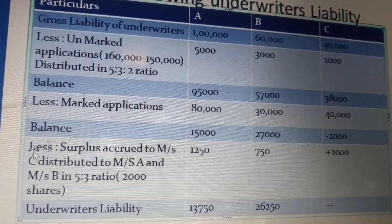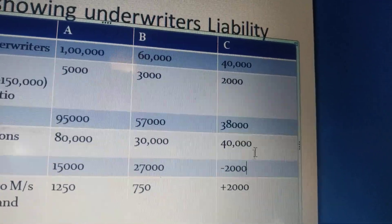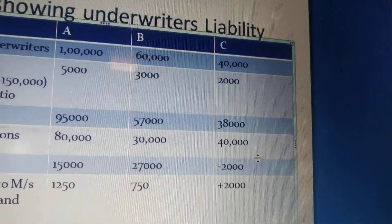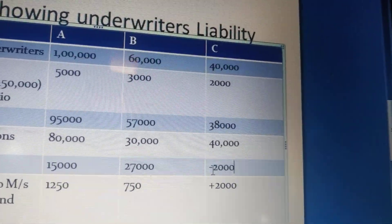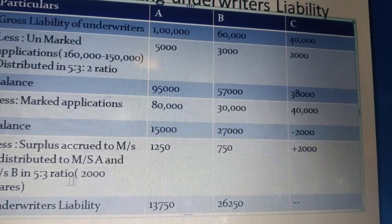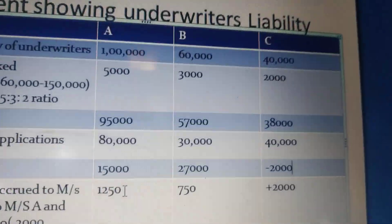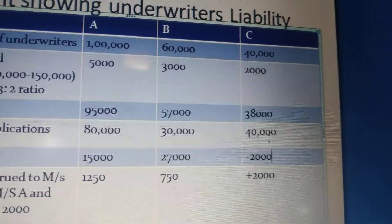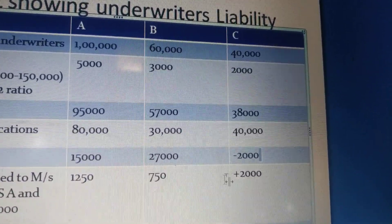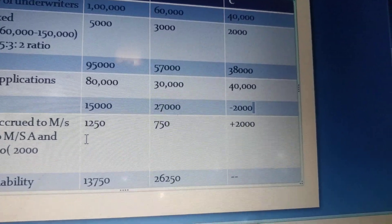Since C has a negative figure, it means C has a surplus of 2,000 shares — C has over-sold. This surplus of 2,000 is redistributed between A and B in the ratio 5:3, giving 1,250 to A and 750 to B. So when we deduct 1,250 from A's 15,000, we get 13,750, and deducting 750 from B's 27,000 gives 26,250.